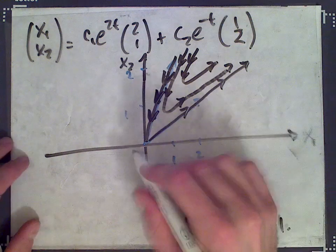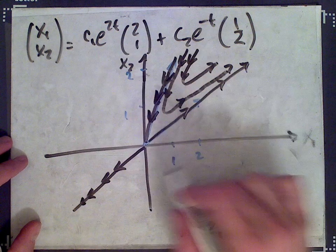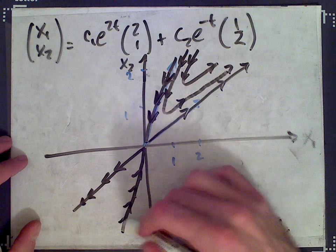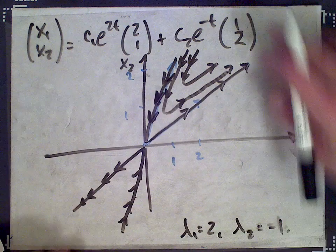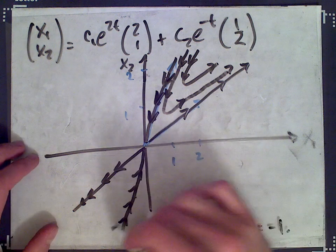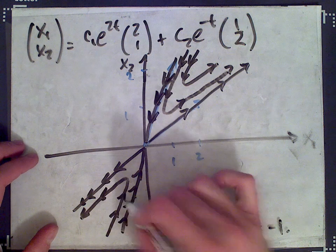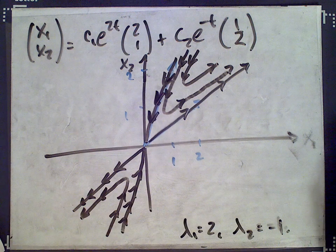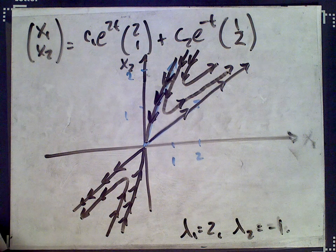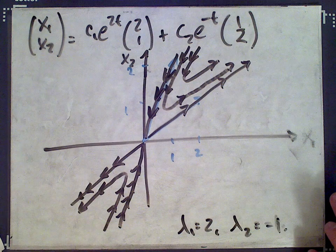The same phenomena occur in the negative directions — coming out from the positive root along [2, 1], and going in toward the origin along the negative [1, 2] direction. That's the complete phase plane diagram and the first video describing phase plane diagrams and solutions to two-dimensional differential equations.